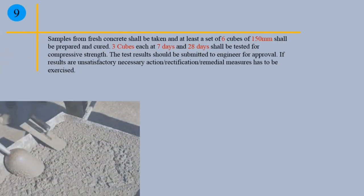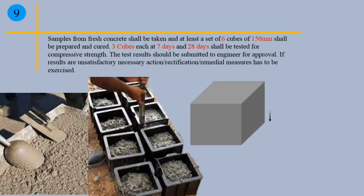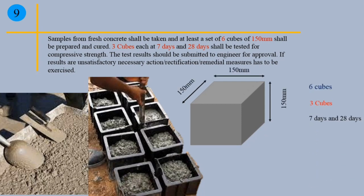Point 9: Samples from fresh concrete shall be taken and at least a set of 6 cubes of 150 mm shall be prepared and cured. 3 cubes each shall be tested at 7 days and 28 days for compressive strength. The test results should be submitted to the engineer for approval. If results are unsatisfactory, necessary action, rectification, and remedial measures have to be exercised.